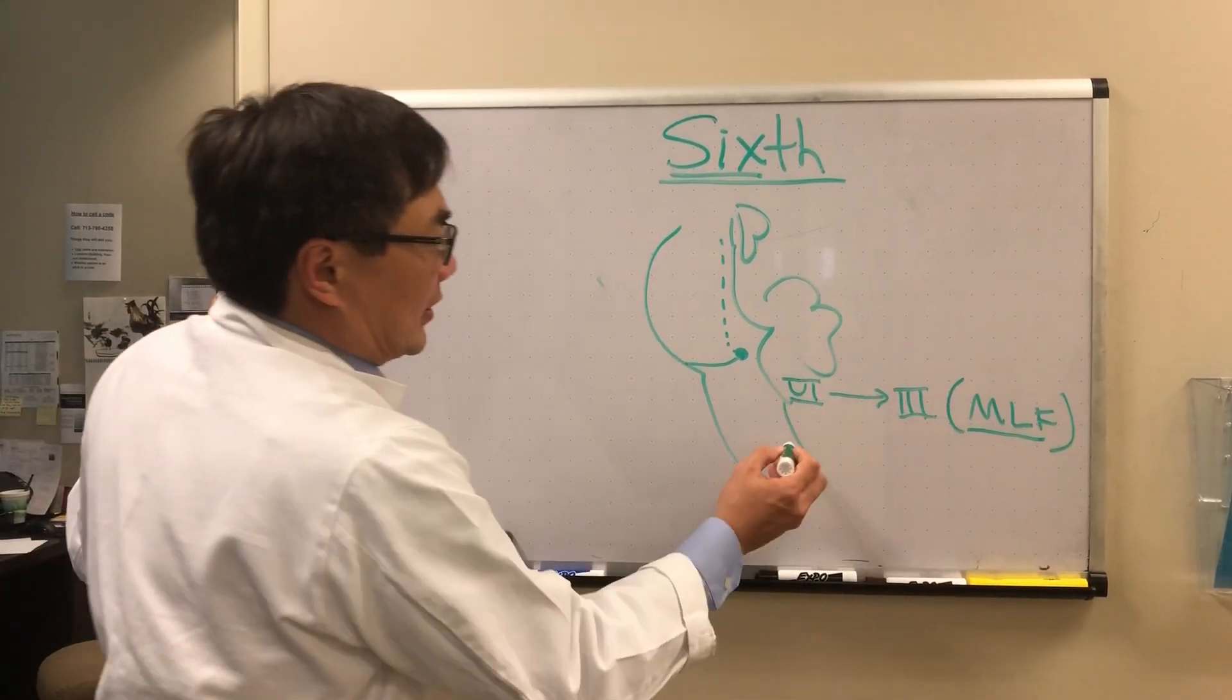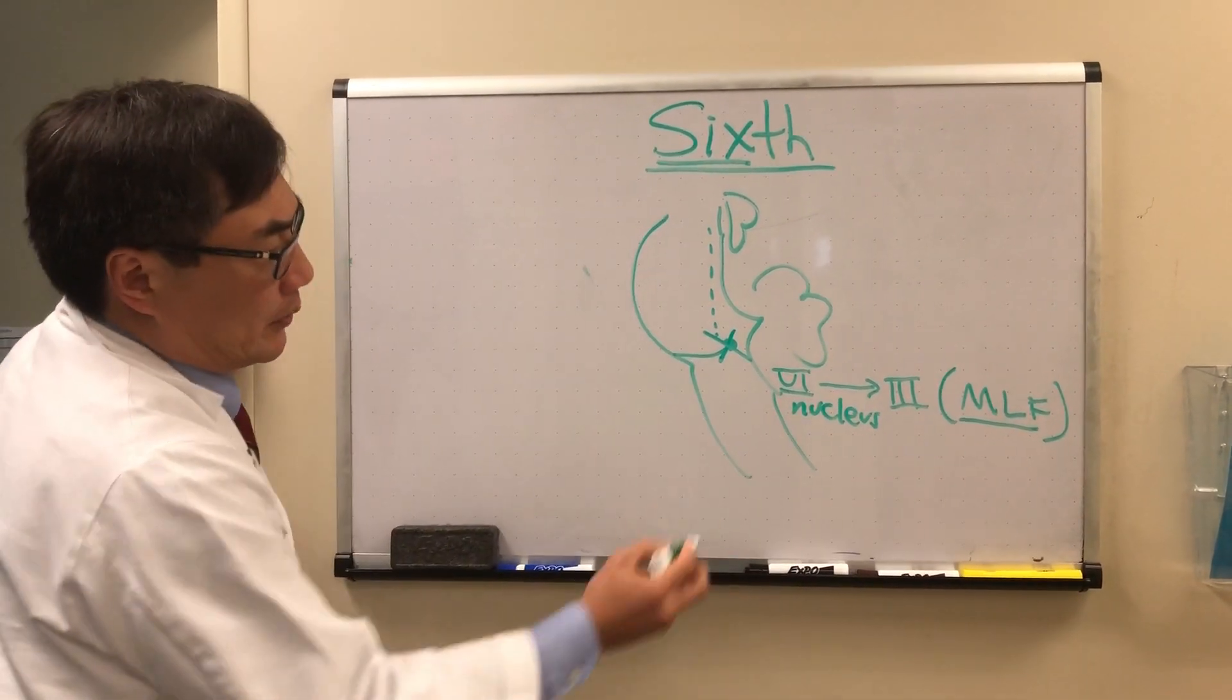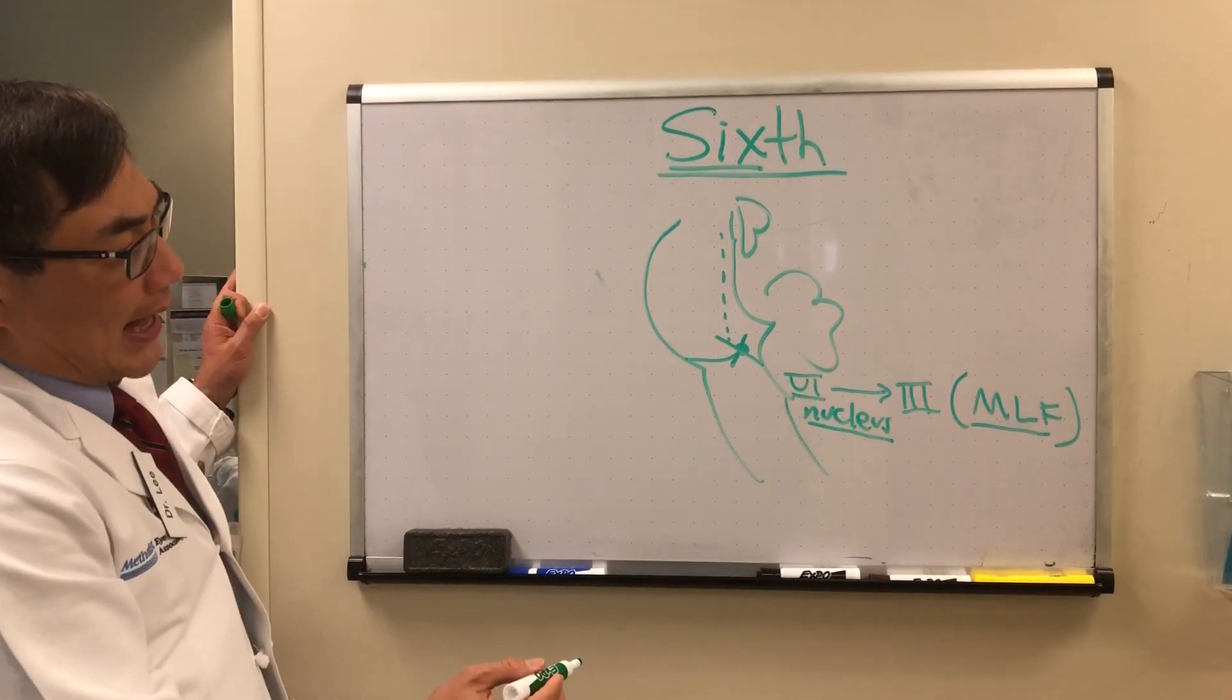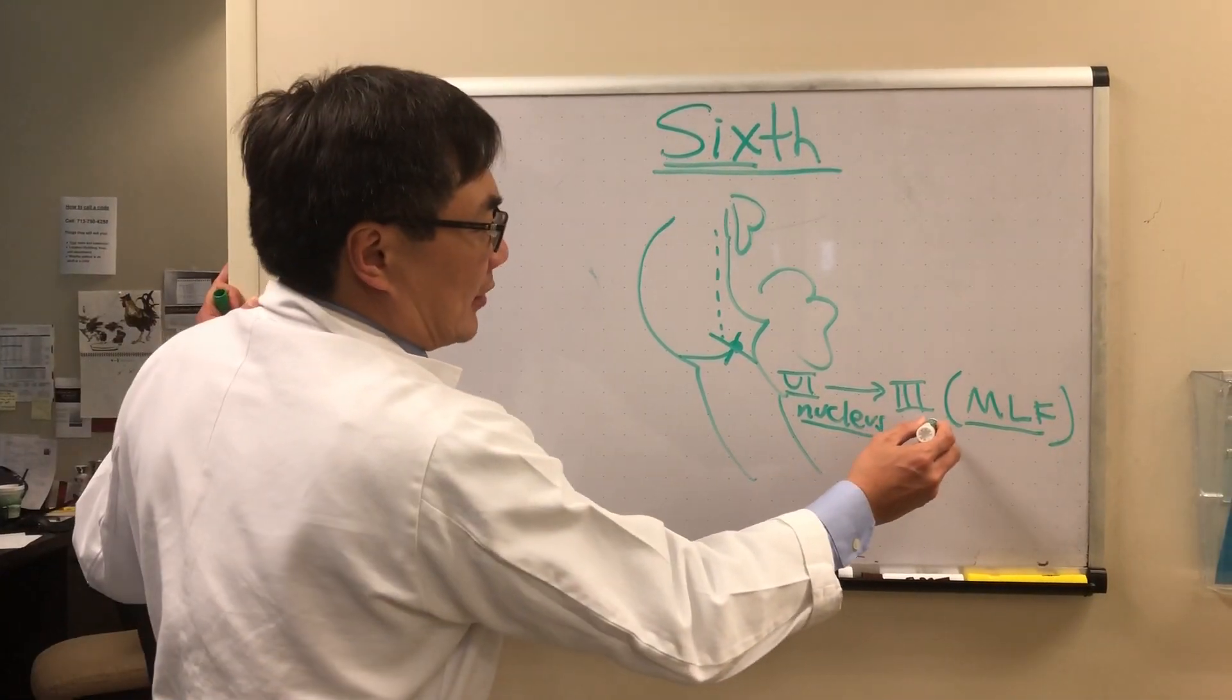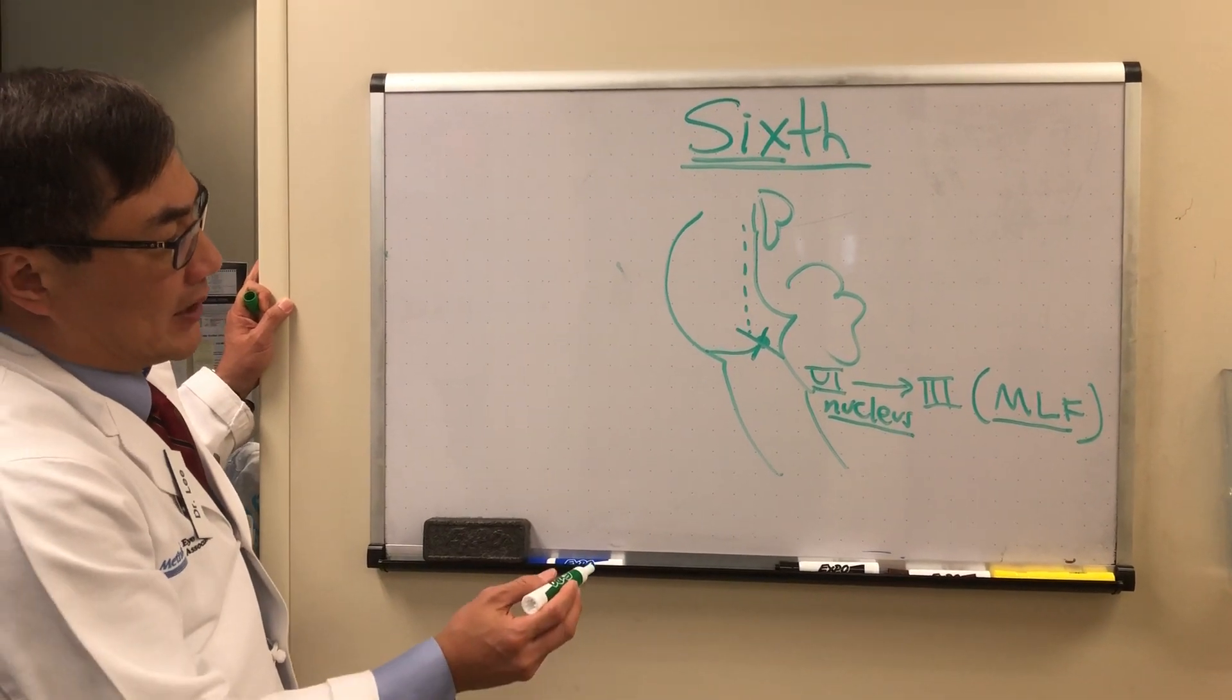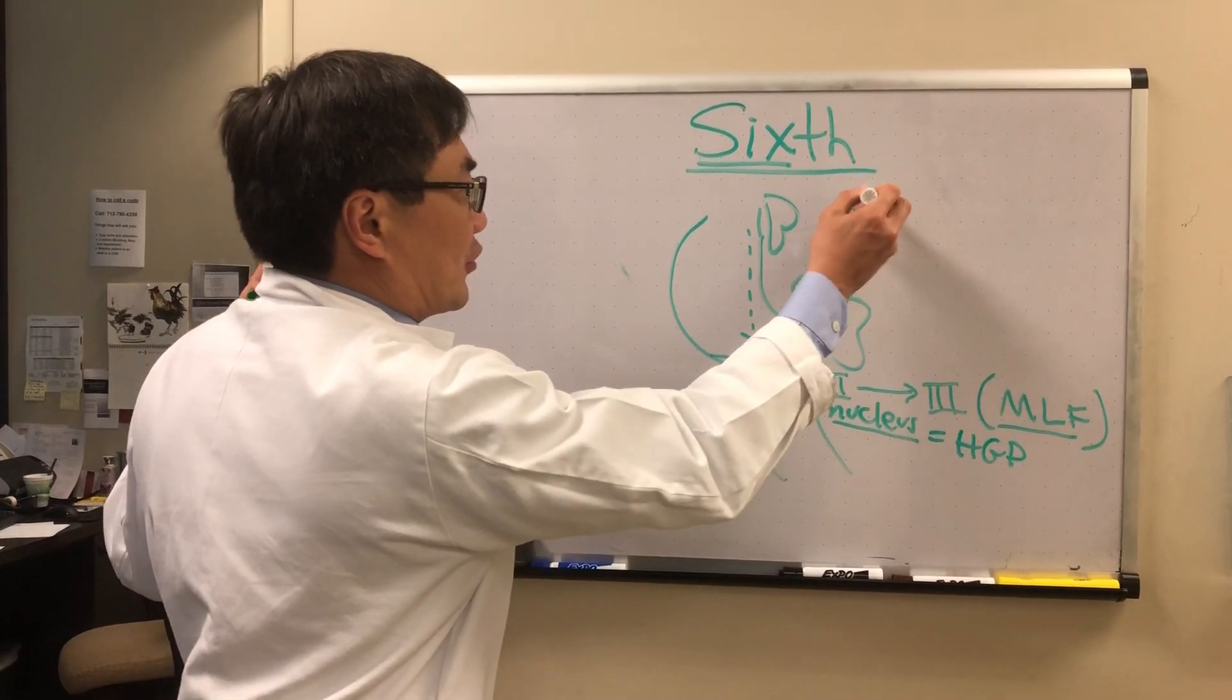So if we ding out the sixth nerve nucleus, we don't just get a sixth nerve palsy. We get both an abduction deficit from the lateral rectus weakness, but also because the contralateral third via the medial longitudinal fasciculus to the medial rectus is out, that produces a horizontal gaze palsy. So a nuclear sixth, the first syndrome that we're going to talk about, produces a horizontal gaze palsy, not an isolated abduction deficit.